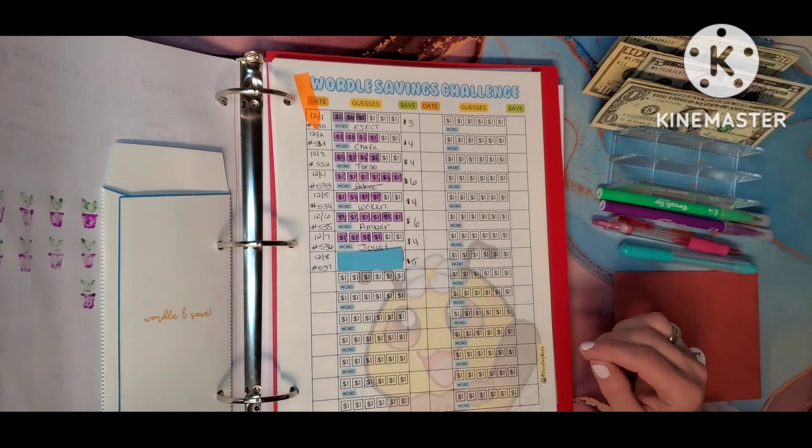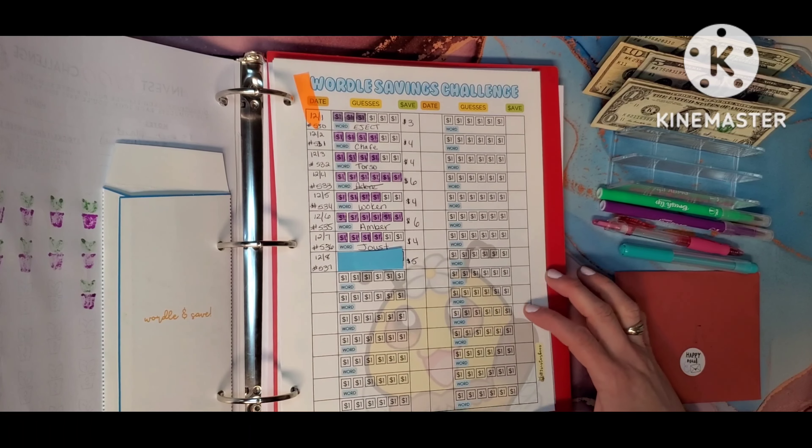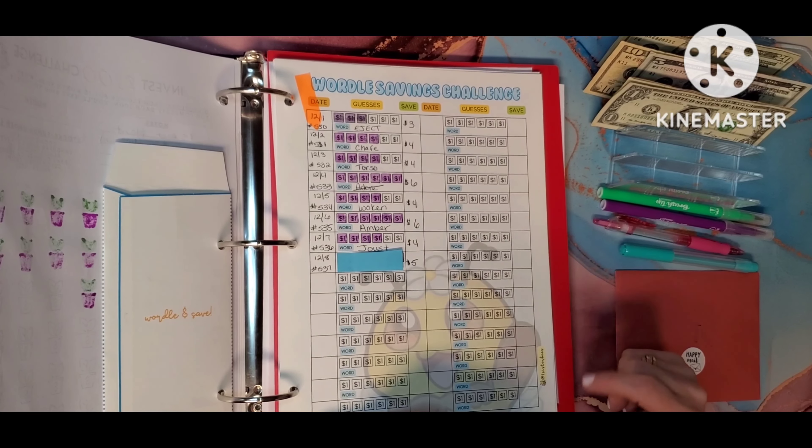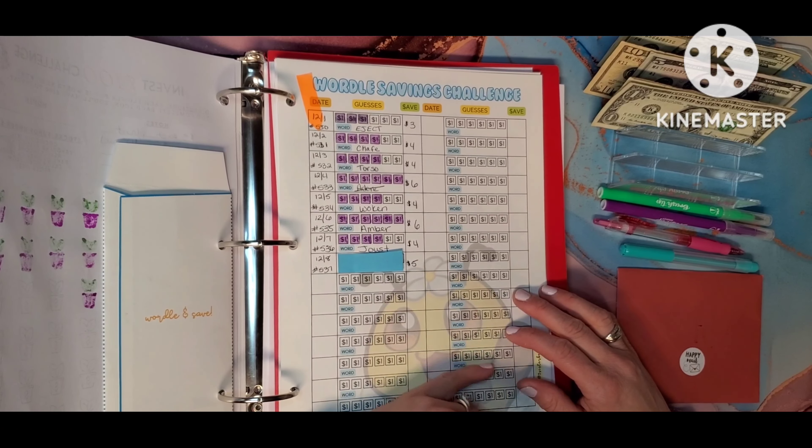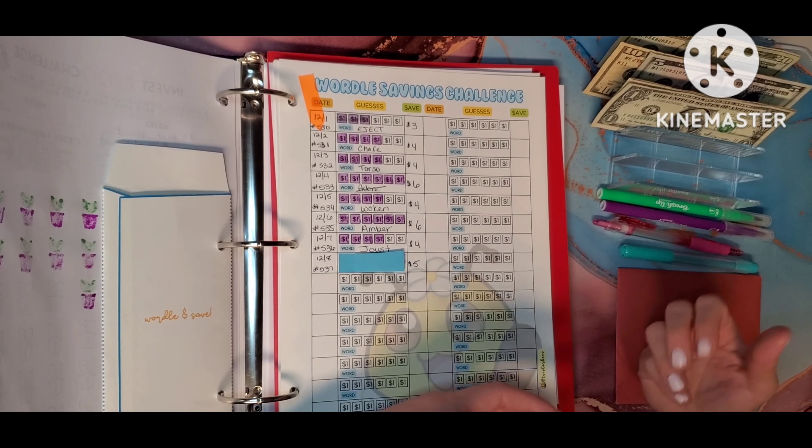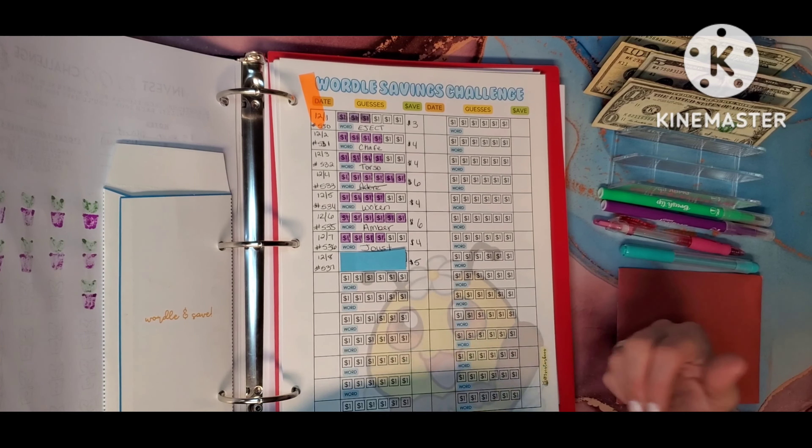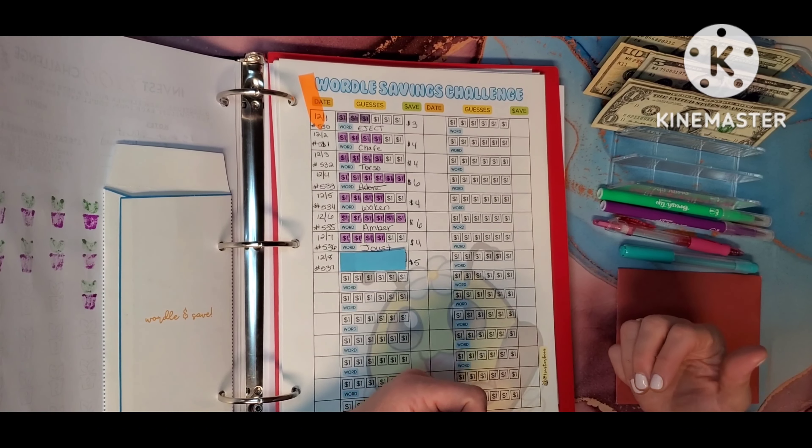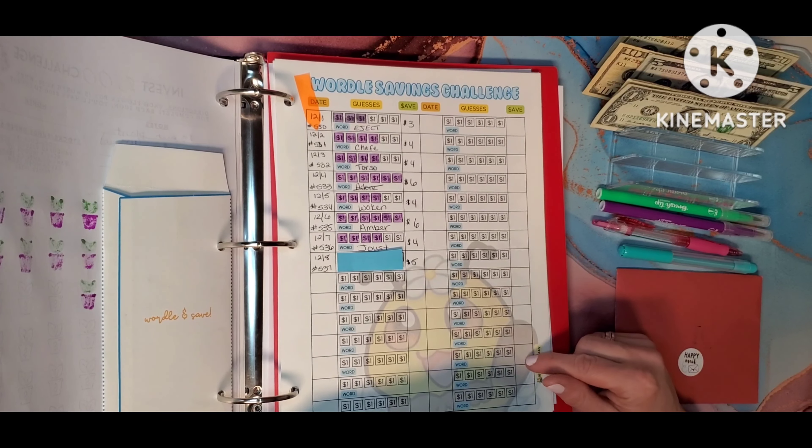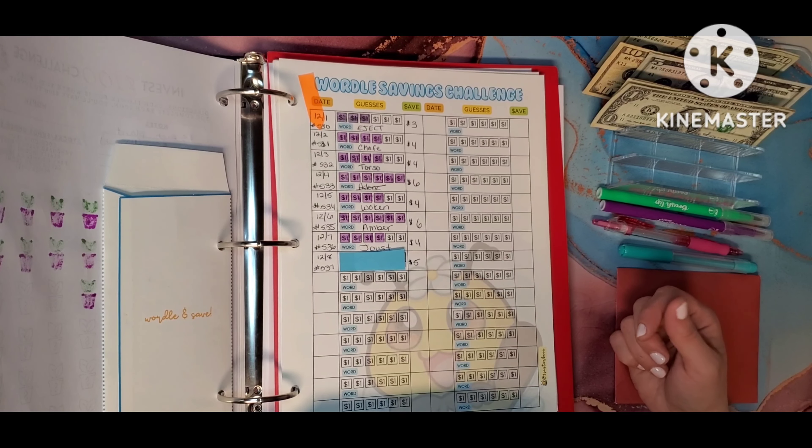This one is a new one that I started last week. This is the Wordle Savings Challenge and this is by Two Sister Bees. This one I am using to have a challenge against my mom. So we are each playing Wordle and our goal is for the whole month to do a Wordle every single day. And what will end up happening is at the end we will compare. Technically if you win by getting the least amount of guesses, you will have the least amount of money in your envelope. But because we are doing a challenge against each other, whoever is the winner is going to swap. And so the winner will end up with the most amount of money and the loser will end up with the least amount of money. This is to go for a vacation that we are planning in a couple of years. So we thought this would be a fun one for us to do.